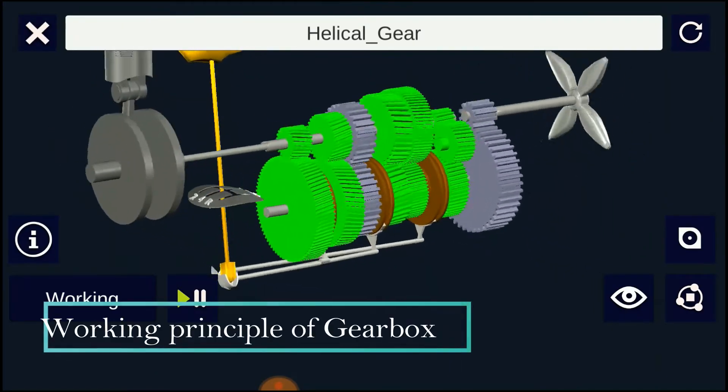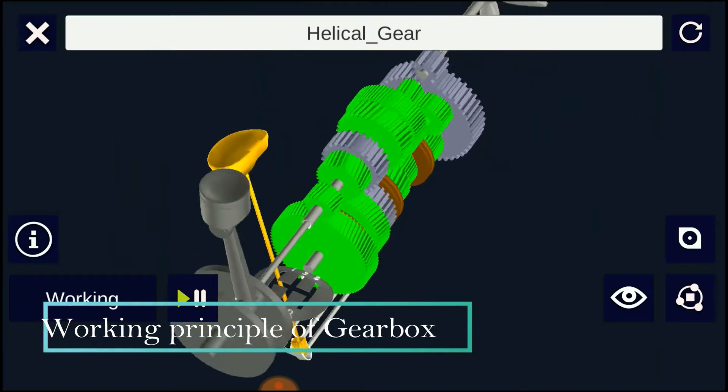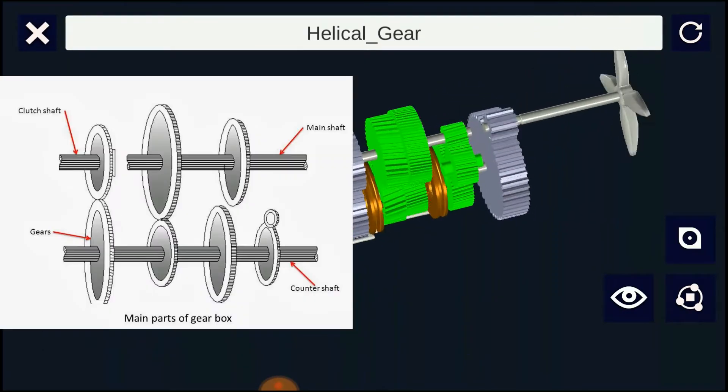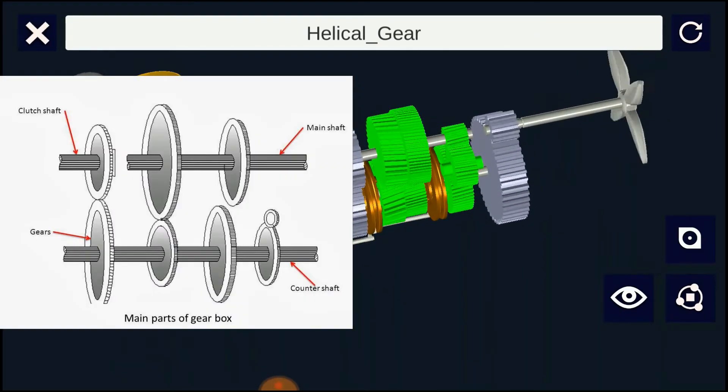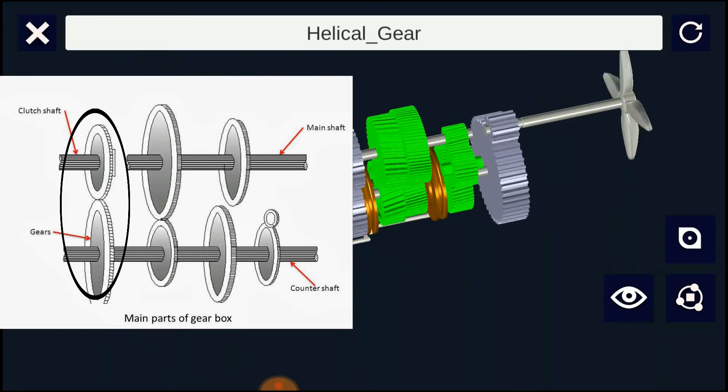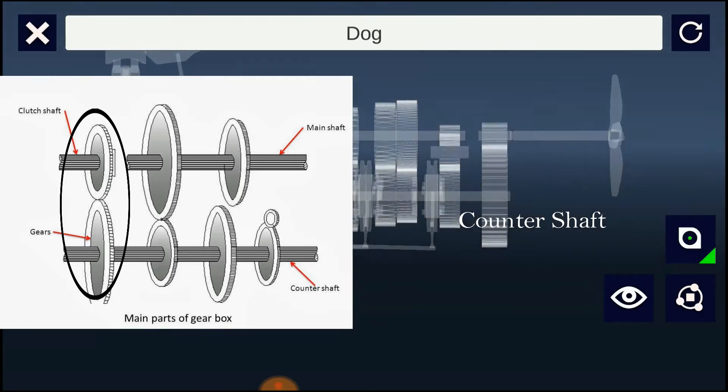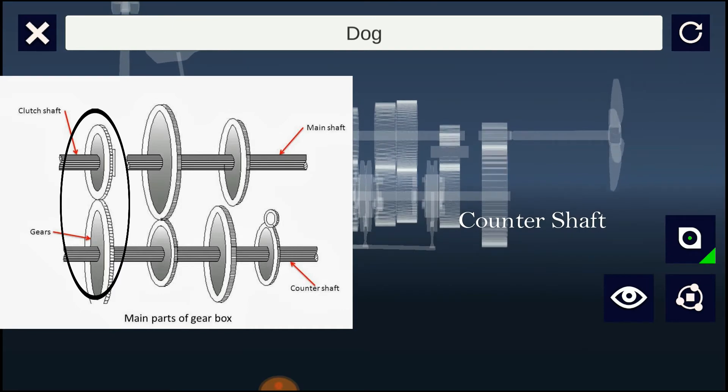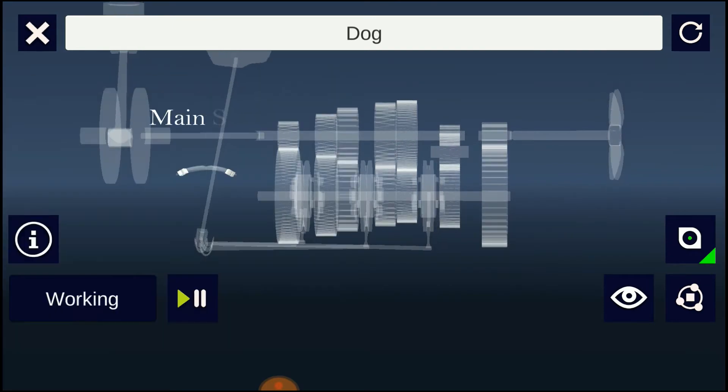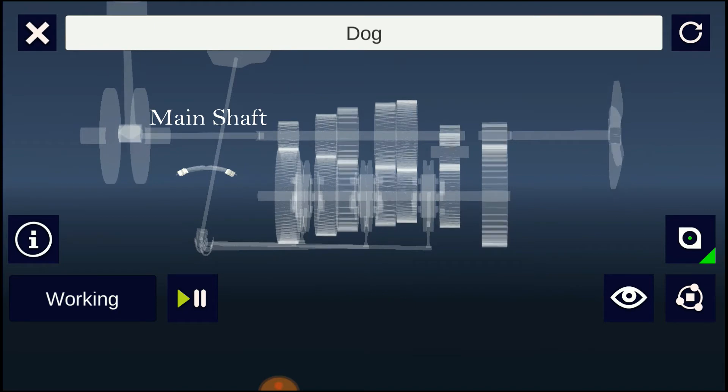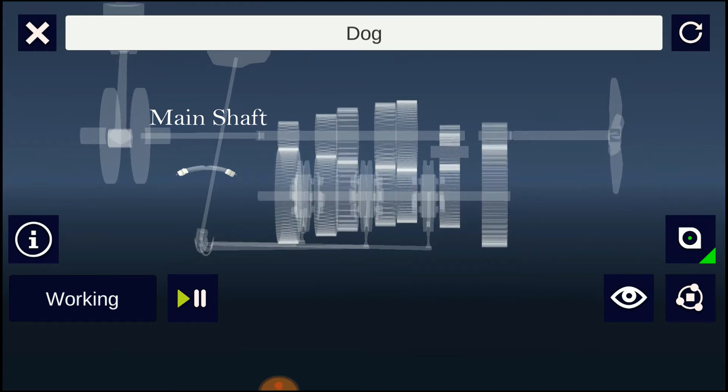Let's check out the working principle of gearbox. In a gearbox, the counter shaft is meshed to the clutch with use of a couple of gears, so the counter shaft is always in running condition. When the counter shaft is brought in contact with the main shaft by use of meshing gears, the main shaft starts to rotate according to the gear ratio.